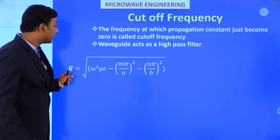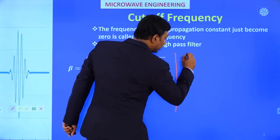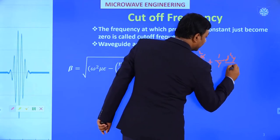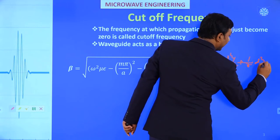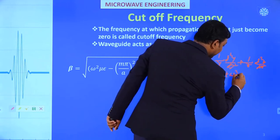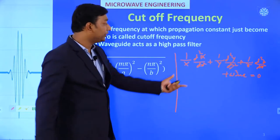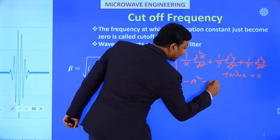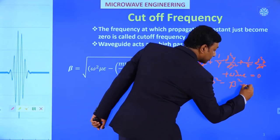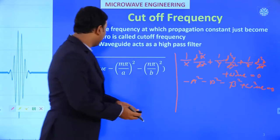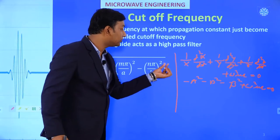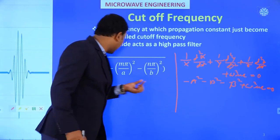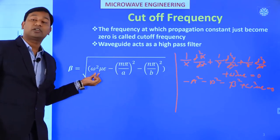Starting from the phase constant — we know the equation: (1/X)(d²X/dx²) + (1/Y)(d²Y/dy²) + (1/Z)(d²Z/dz²) + ω²με = 0. From this we get: -s² - b² - β² + ω²με = 0, where s = mπ/a and b = nπ/b. So β = √(ω²με - (mπ/a)² - (nπ/b)²), the propagation constant which varies with frequency.